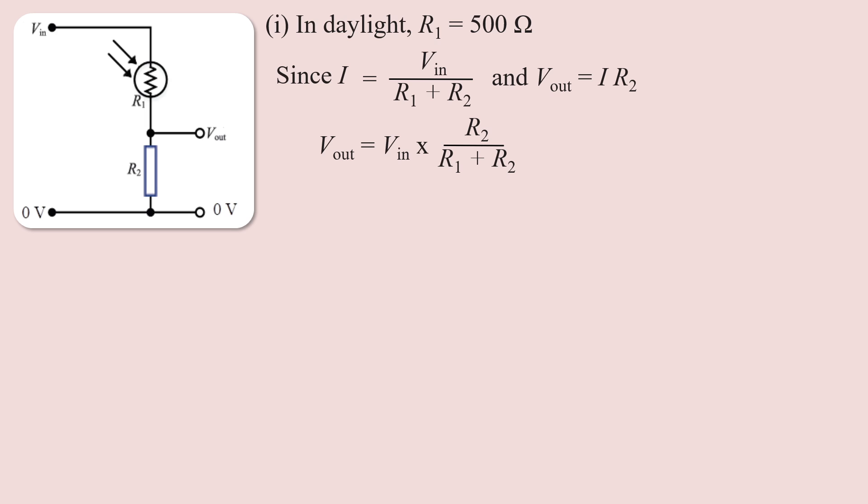The voltage across R2 equals V_in multiplied by R2 divided by R1 plus R2. Applying this formula with R1 equal to 500 ohms in daylight, the potential difference across R2 is calculated to be approximately 4.1 volts.